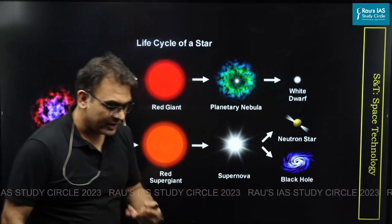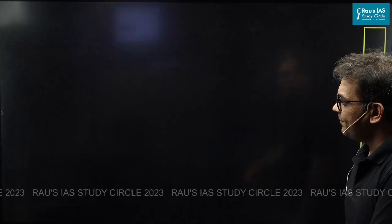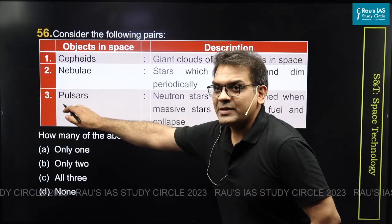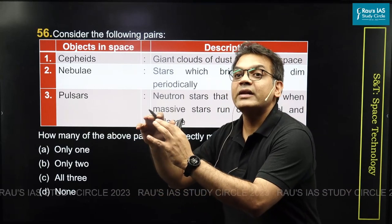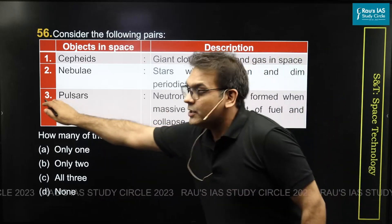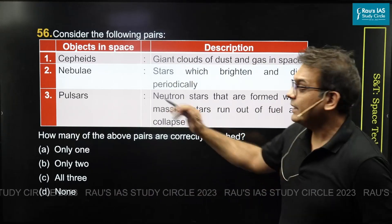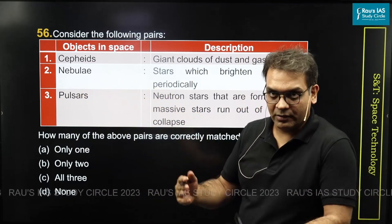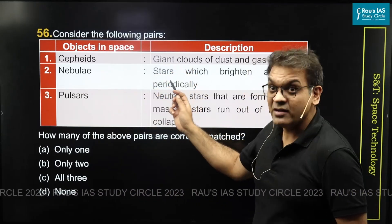In brief, that is the life cycle of a star. So, what is the question asking? What is a pulsar? A pulsar is the leftover core of a neutron star. That is what it is. So, option number 3 is rightly paired — that is alright. Nebula is just a cloud of gas and dust, so it is not rightly paired.